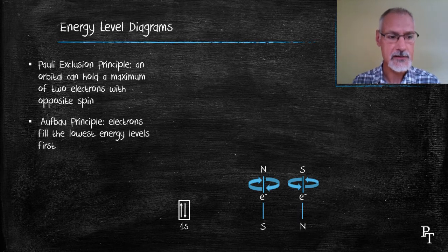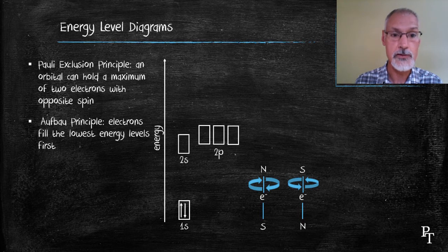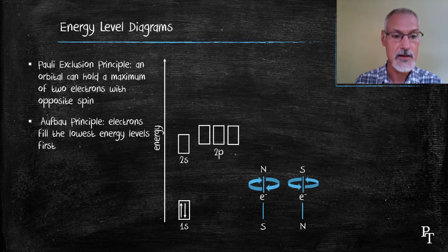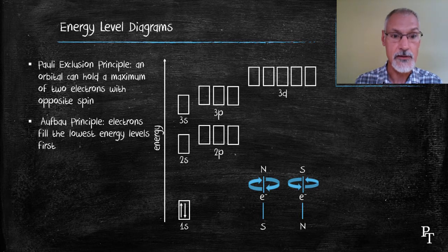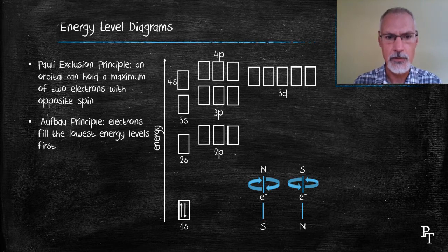The Aufbau principle states that electrons must fill the lowest energy levels first. So the first place that electrons would occupy is the 1s orbital. As we increase energy and move out from the nucleus, we would then go to the 2s orbital and the 2p orbitals. The 2p orbitals have a slightly higher energy than the 2s, so I'm showing them here slightly elevated above the 2s orbitals. When you move to the third energy level, you have the 3s, the 3p, and the 3d — again, the d orbitals would have slightly more energy than the p and the s. I'll stop here at 4p.